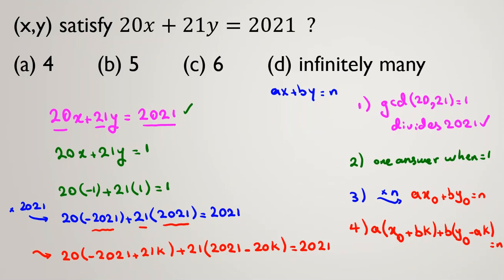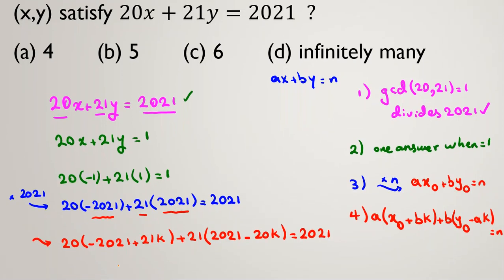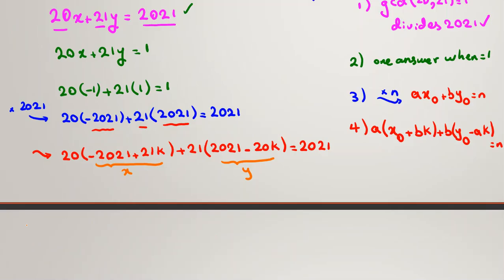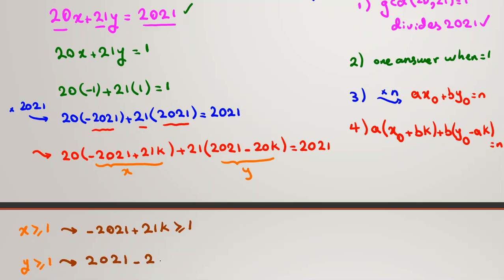Now, in this case, we found general answer. It is X, it is Y. The problem says X and Y should be positive integers. So, if we consider that X is positive integer means at least 1 and Y is at least 1. So, from first one, if I replace X with the value, we've got negative 2021 plus 21K is at least 1.